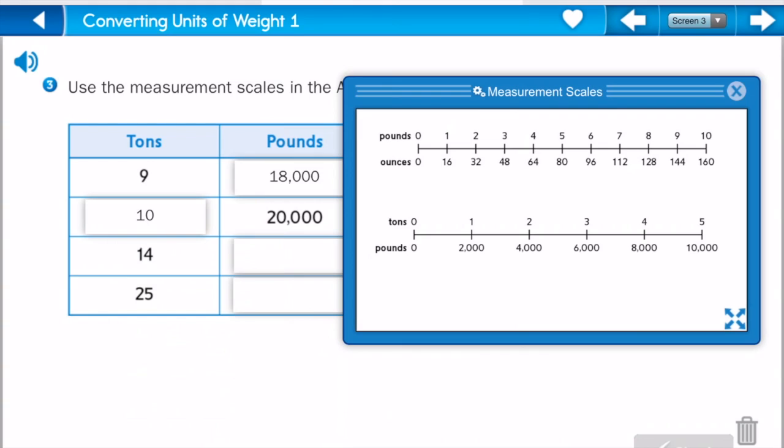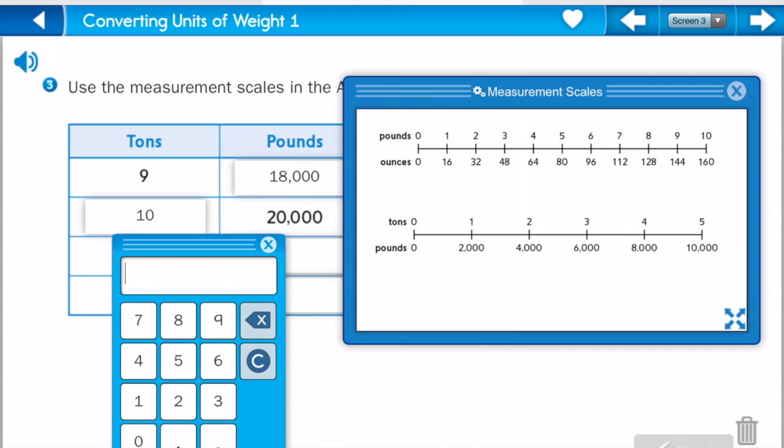But what I can do is, I can take 14 times 2,000. Once again, that sounds like it's going to be a really hard problem. So what I can do is, I can just multiply 14 times 2, and then just add the three zeros on the end. So if I do that, I'm thinking in my head, what's 14 times 2, or what's 14 plus 14? I'm thinking, and I decide that 14 plus 14 equals 28, so then all I have to do again is put those three zeros on the end. So I get 28,000.